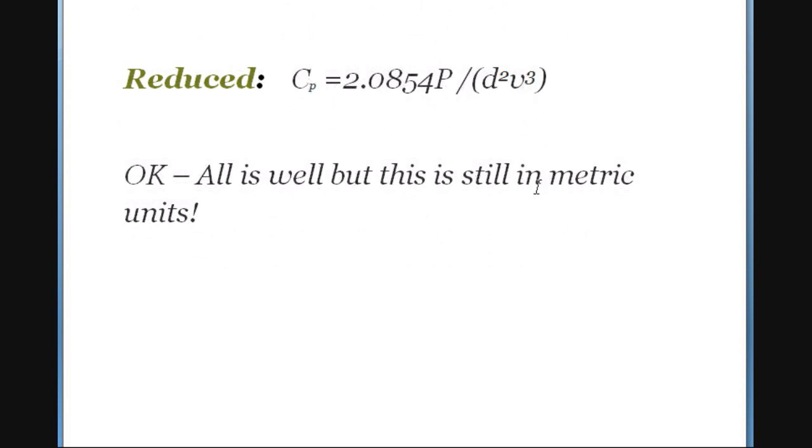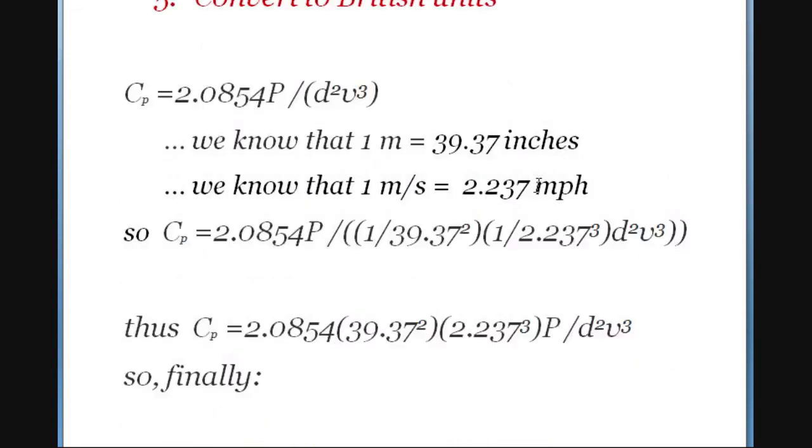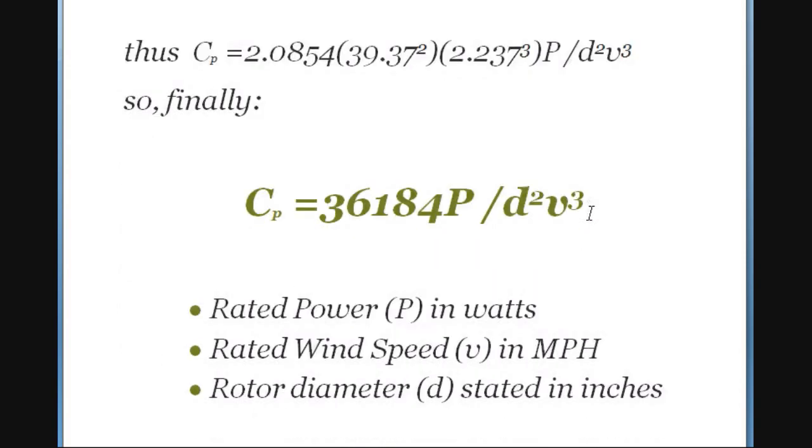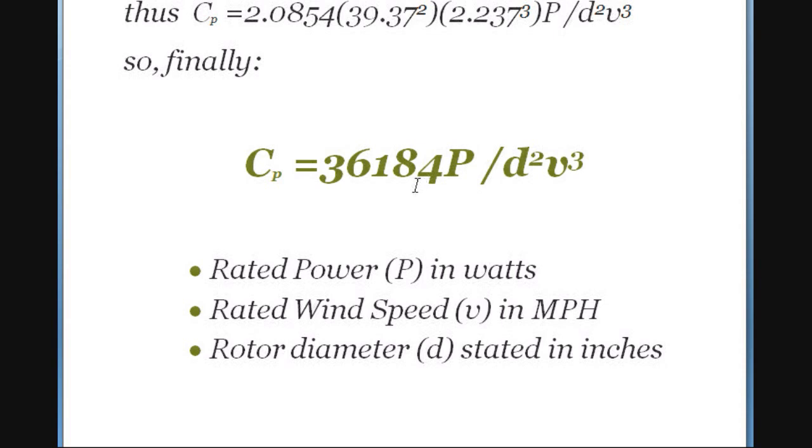All right, everything's looking good. The only thing we haven't done yet is we've switched over to British units from metric units. So that's not too hard to do. We know that a meter is 39.37 inches and we know that a meter per second is the same as 2.237 miles per hour. So I can go up into this equation here and look at the units that are in meters, which is this d up here, that's the diameter of the rotor. I can come up with the equivalent in inches. I can do the same thing with the velocity which is meters per second and use this value for miles per hour there. So you can go through this calculation, multiply it out, and you'll end up with this brand new formula which you're free to use: 36,184 times power in watts divided by diameter in inches and velocity of the wind in miles per hour cubed.